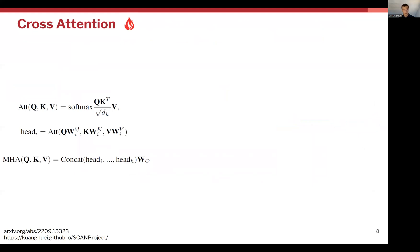Cross-attention, because we're going between the two modalities of image and language, works by taking the softmax of the query Q with the key K and multiplying that by the value V, with a normalization as well. The query here originates from the image features — the embedded image features — whereas the key and values are embeddings of the text features. You have an attention head consisting of weighted queries, keys, and values in this attention function, and you can form a multi-head attention layer by concatenating these heads and weighting them again. All of these weight parameters are the tunable parameters of the SmallCap model, and you can play around with how many parameters you put in it, as we will see in the results section.